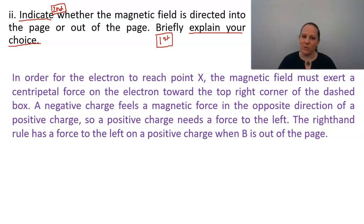So, in order for the electron to reach point X, the magnetic field must exert a centripetal force on the electron toward the top right corner of the dashed box. A negative charge feels a magnetic force in the opposite direction of a positive charge, so a positive charge needs a force to the left. The right-hand rule has a force to the left on a positive charge when the magnetic field B is out of the page.